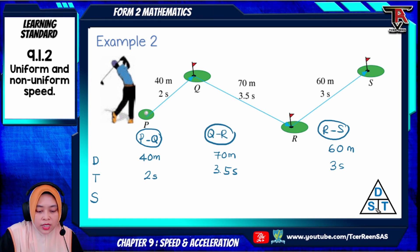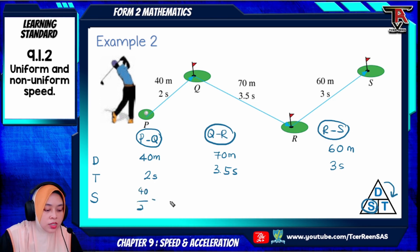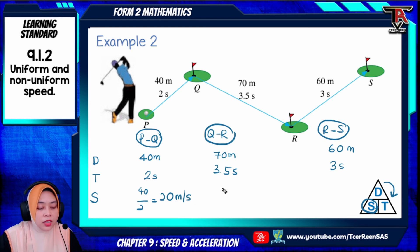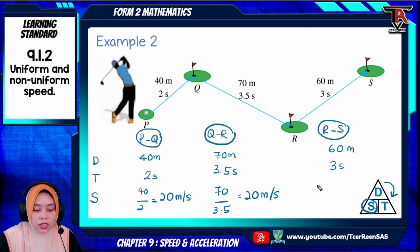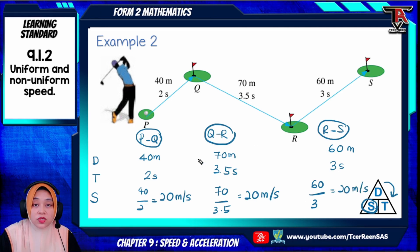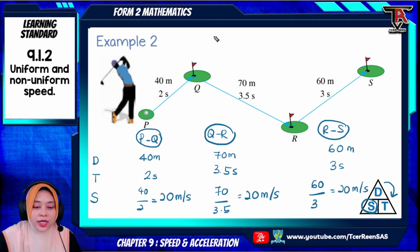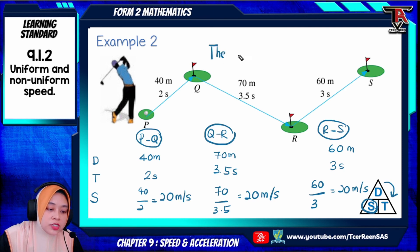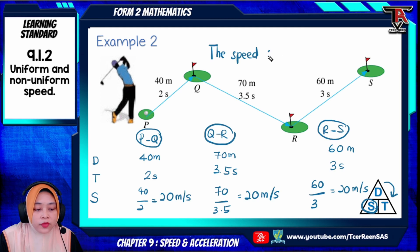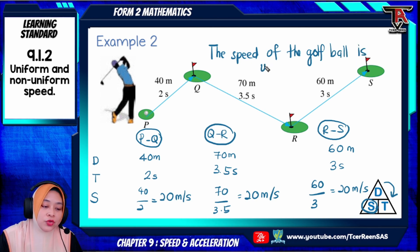Speed equals distance divided by time. So 40 divided by 2 equals 20 metres per second. The next part also gives 20 metres per second. And 60 divided by 3 also equals 20 metres per second. All the speeds for each part are the same, so we can conclude that the speed of the golf ball is uniform.